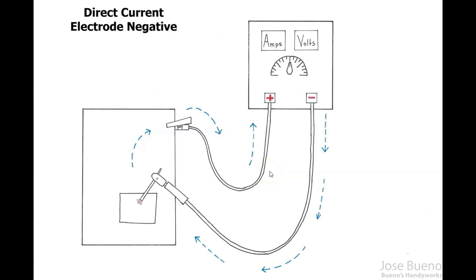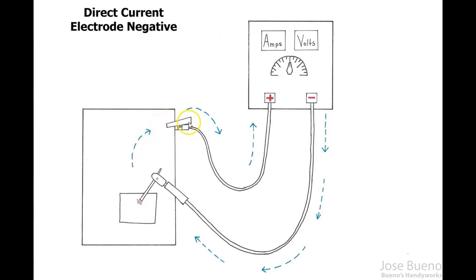This is going to change some of the characteristics of our weld and welding arc, but let's focus on the flow of current for now. Following these arrows, we see that in DC EN current begins at the welding machine, exits through the negative terminal, into the electrode cable, into the electrode holder, into the electrode, through the welding arc, into the workpiece and work table, then into our ground clamp and into the ground cable, returning back to the welding machine at the positive terminal.